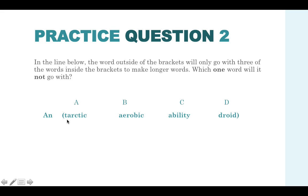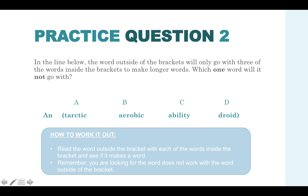Let's work through each of these. Let's put 'an' with the word 'tartic'. This would make antarctic. So that is a word, so you know it's not going to be that answer. Anaerobic, an ability, android. You can tell that the correct answer is C because an ability is not a word. Instead, this would be inability. Read the word outside the bracket with each of the words inside the bracket and see if it makes a word. And if it doesn't, then you know that that's going to be your answer.